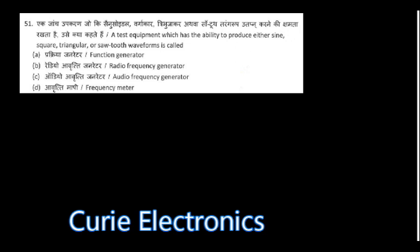A test instrument which has the ability to produce sine, square, triangular, or sawtooth waveforms is called a function generator — all of you know this; you might have used it in the lab.